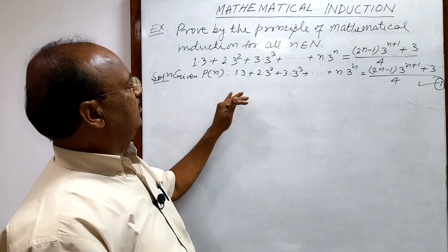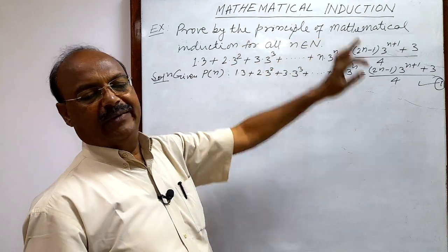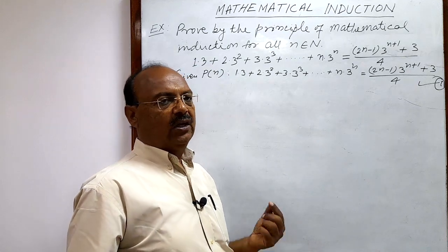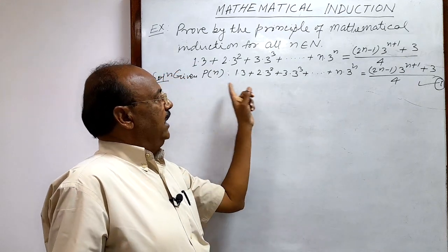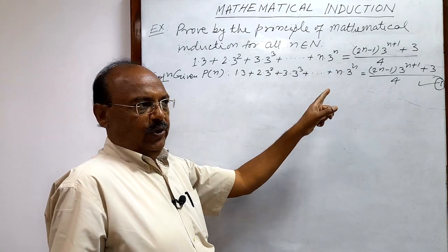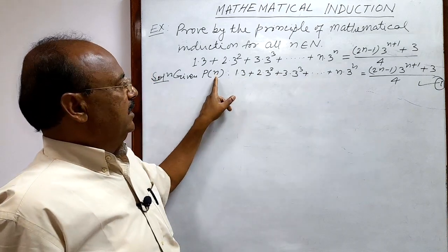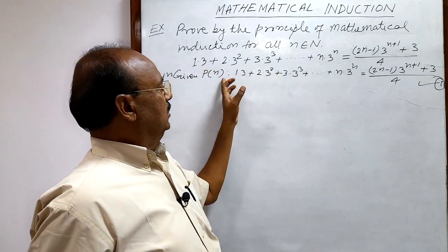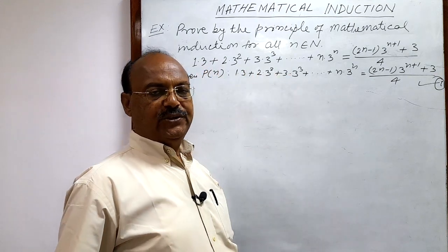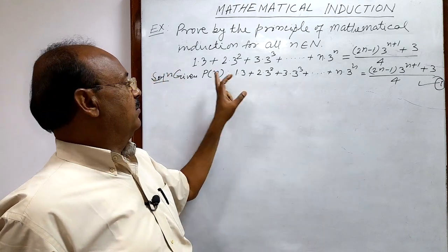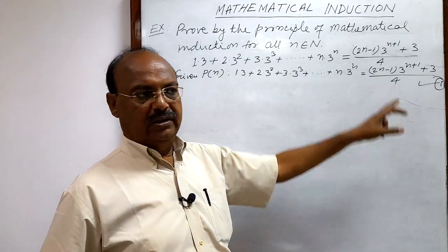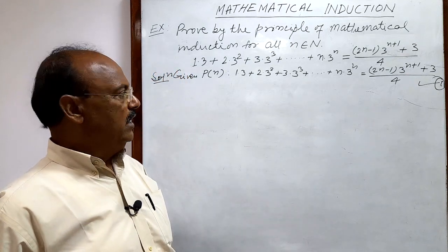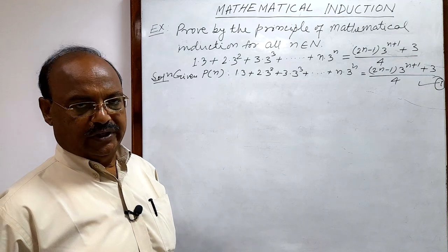We will be using the method known as the principle of mathematical induction. In this method we have to take three steps. First step: we have to show that P(1) is true. Second step: we have to assume that P(R) is true — we get P(R) by putting n = R in relation number 1. Third and last step: we have to show that P(R+1) is true.